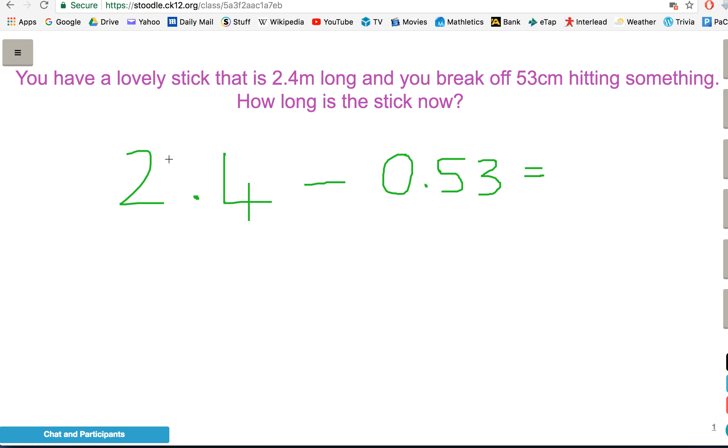If you wanted to, you could make it 240 take away 53, and that would be 240 centimetres take away 53 centimetres. It's the same thing. You've just got to make sure you're either working in metres or in centimetres. In this case, I prefer working in metres.